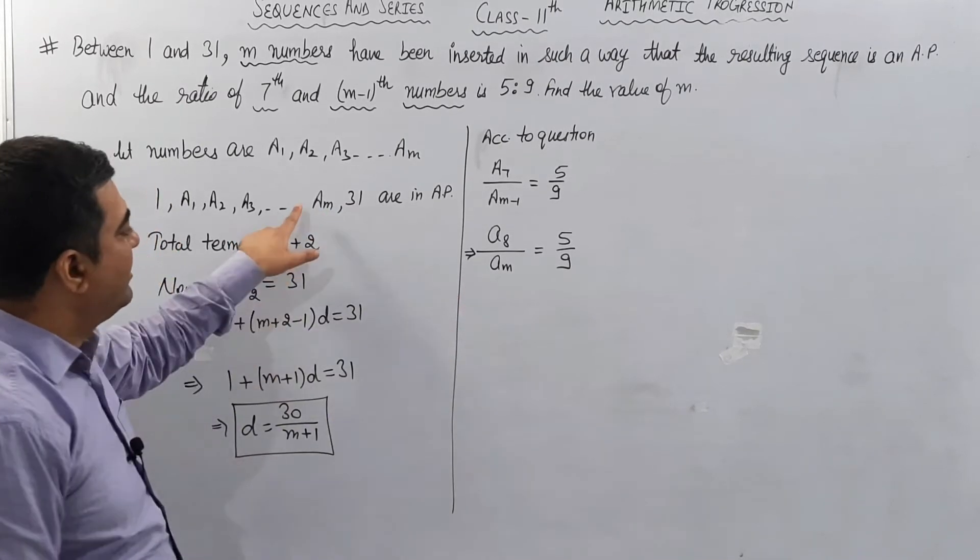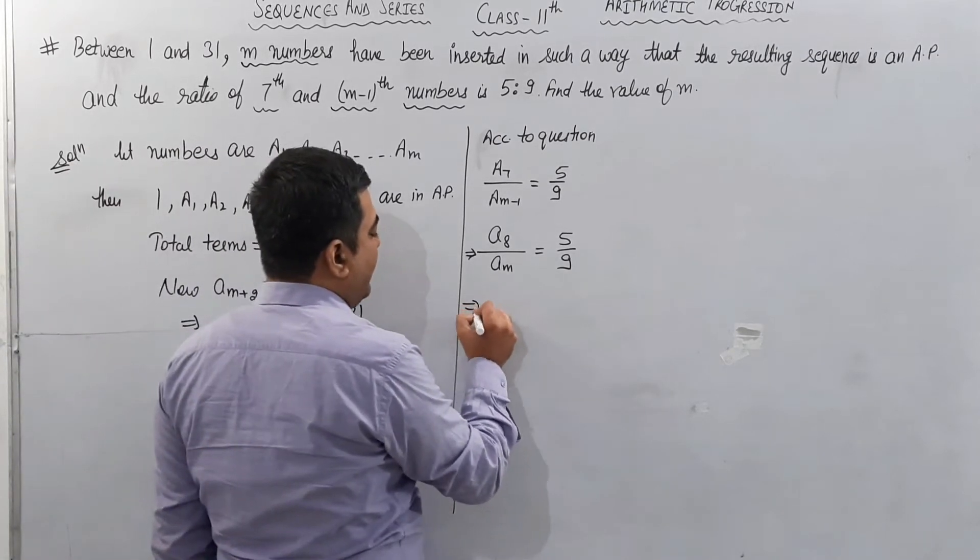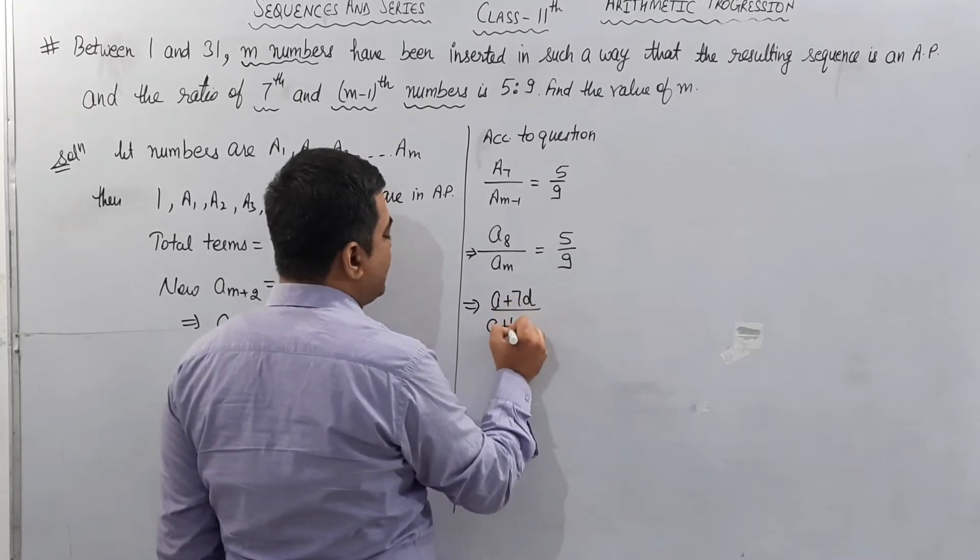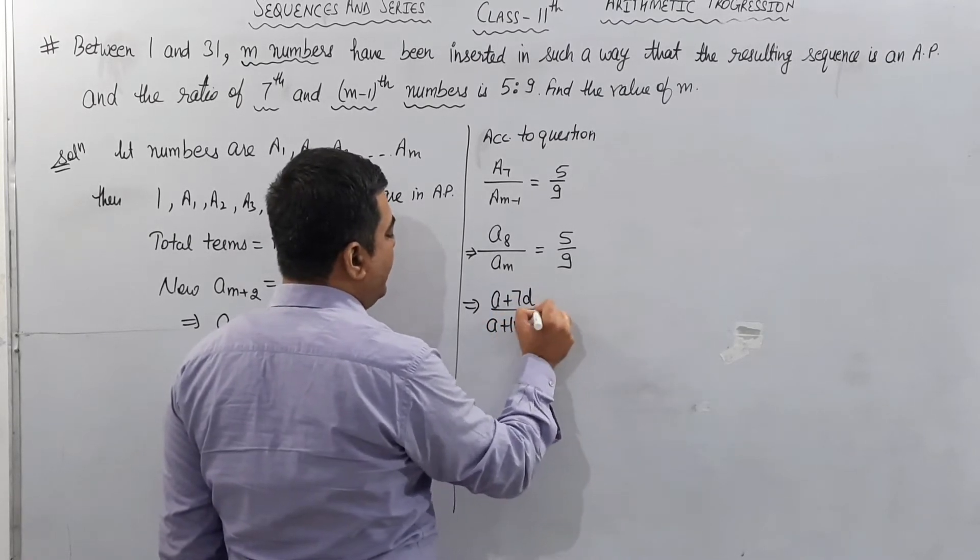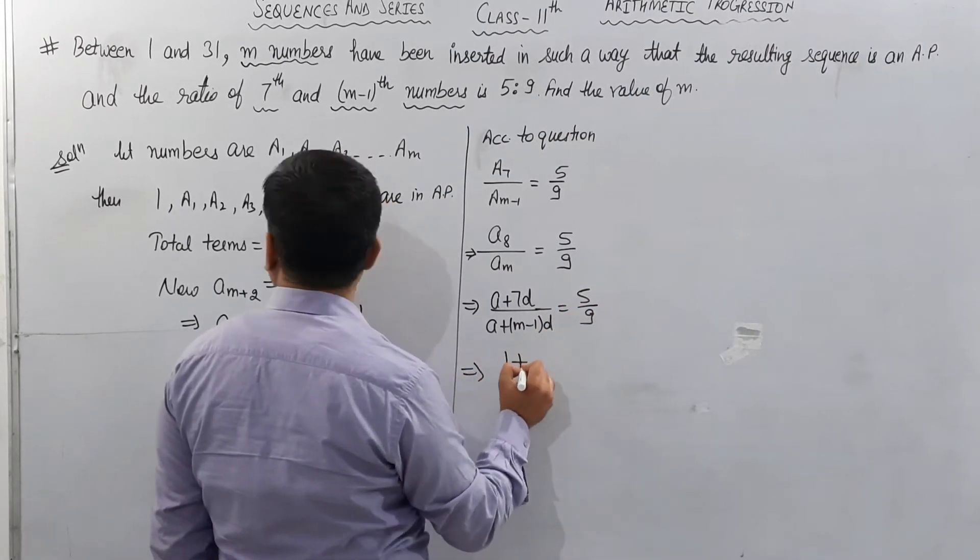7th number means (m+1)th term. (m-1)th number is am minus 1. Now a8 we can write as a plus 7d. a_(m-1) is a plus (m-1)d equals 5 upon 9.